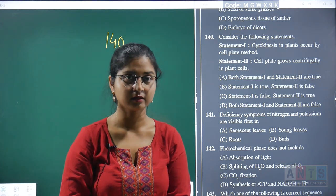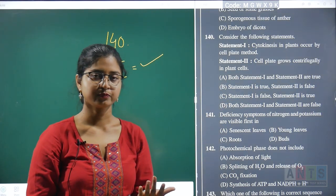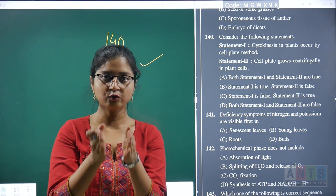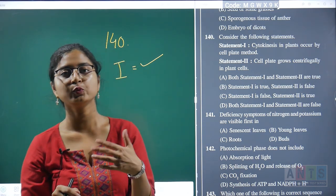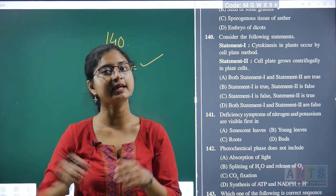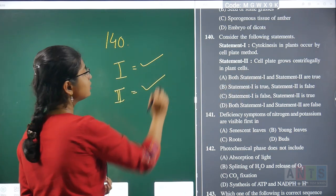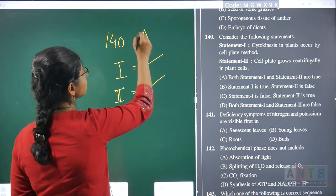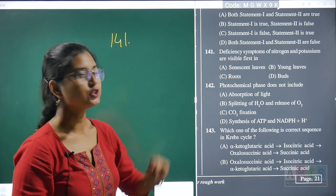Question 138: in a dorsiventral leaf, the location of palisade parenchyma and phloem. Adaxial means upper; abaxial means lower. In the leaf cross-section, palisade parenchyma is located toward the adaxial (upper) epidermis. In the vascular bundle, xylem is toward the adaxial surface while phloem is toward the abaxial (lower) epidermis. Hence, question 138's correct answer is option A.